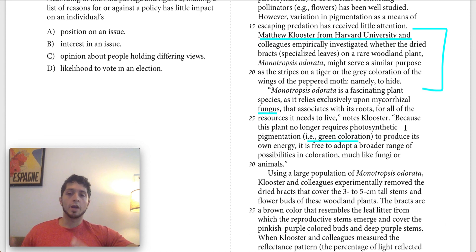The next sentence, however, brings in the broader spectrum of plants because it's specifying this specific plant no longer requires photosynthetic pigmentation to produce its own energy. This sort of references in an implied way, or in an inferential way, it brings in other plants. And what it's saying about other plants is that they do require photosynthetic pigmentation, so they are green. And basically that gives them a more narrow range of possibilities in their coloration.